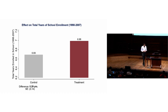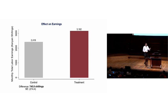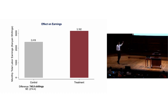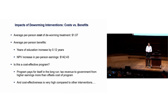Turning to educational and economic outcomes: the control group had about 6.7 years of schooling on average, while the treated group had closer to 7 years. That difference of 0.3 years is statistically significant. Commensurate with that, there are significant increases in earnings — from 2,400 to 3,100 Kenyan shillings per month, something like a 30% increase, as a result of two and a half extra years of the deworming treatment.